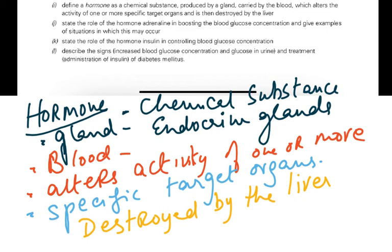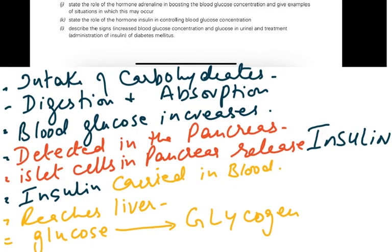Now let's discuss the role of insulin in controlling blood glucose concentration. After a carbohydrate-rich meal — rice, roti, fries — these carbohydrates are digested, absorbed into the blood, and blood glucose rises. This is detected by the islet cells of the Langerhans in the pancreas, which then release the hormone insulin into the blood.